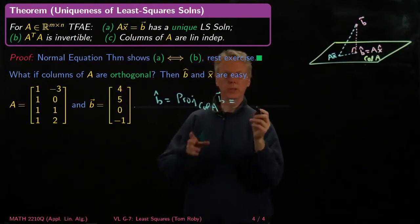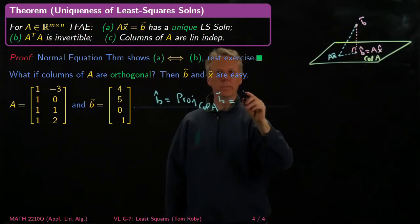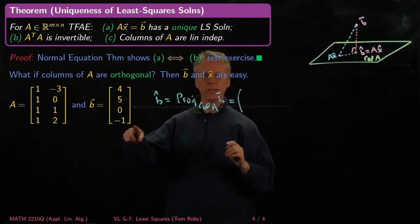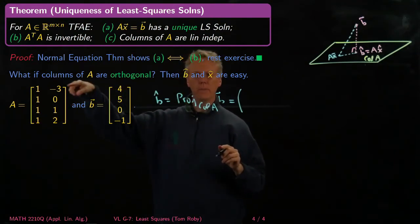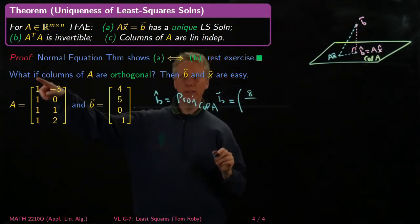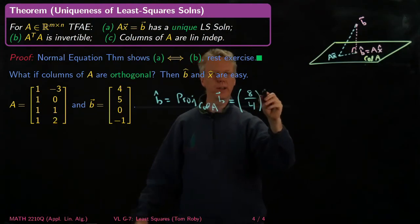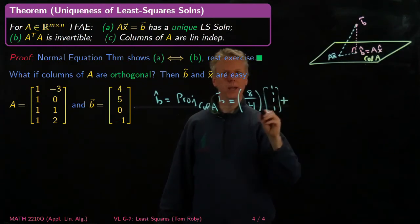So all we have to do for this problem is say, B hat is going to be the projection onto the column space of A of the vector B. And so what do you do with that? Well, you remember you've got your formula where it's this ratio of dot products. And so what's the ratio of dot products? I need to take B dotted with the first vector. That's the numerator. I get 8 here. And then I divide by the length of this vector, which is 4. And now I multiply it by that vector, which is [1, 1, 1, 1].